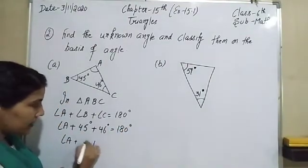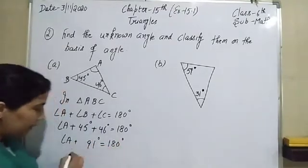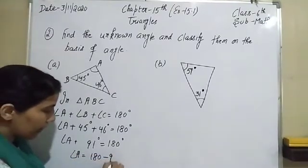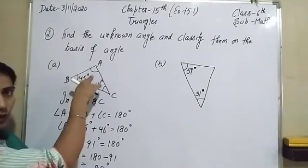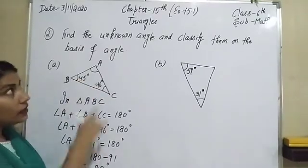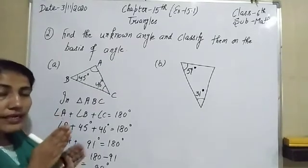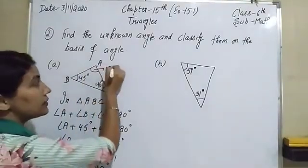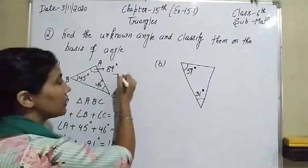So angle A plus 45 plus 46 equals 180 degrees. That gives angle A plus 91 equals 180 degrees. So the value of angle A is 180 minus 91, which is 89 degrees. Now we have to find the type of angle. Angles less than 90 degrees are called acute angles. Since angle A is 89 degrees, which is less than 90, the type of angle is acute angle.